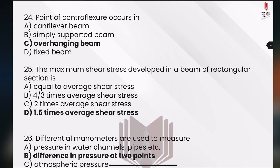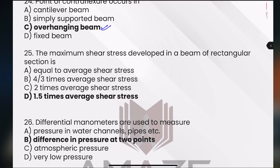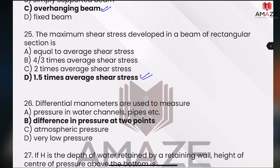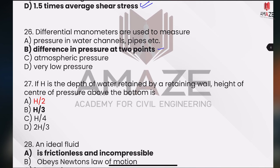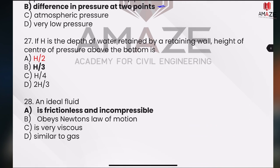Point of counter-flexure. Overhanging beam — generally, we say the shear stress is 1.5 times. In case, if you look at the differential manometers, two points — pressure difference, depth of water. If you look at this question professionally, then we have to find the answer. If you do a correct answer, it's 2.67 marks.